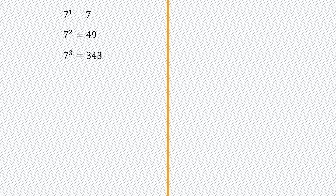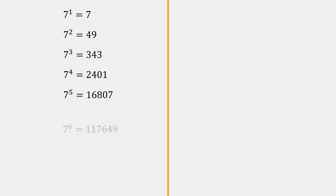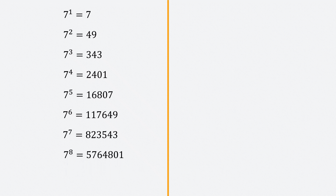The first thing we'll try to do is check if there's a pattern in the powers of 17. So let's first check the powers of 7. 7 to the power 1 is 7, 7 squared is 49, 7 cubed is 343, 7 to the power 4 is 2401, 7 to the power 5 is 16807, 7 to the power 6 is 117649, 7 to the power 7 is 823543, and 7 to the power 8 is 57648001. The pattern with the last digits is: 7, 9, 3, 1, 7, 9, 3, 1 — the same four numbers repeat in the units place.